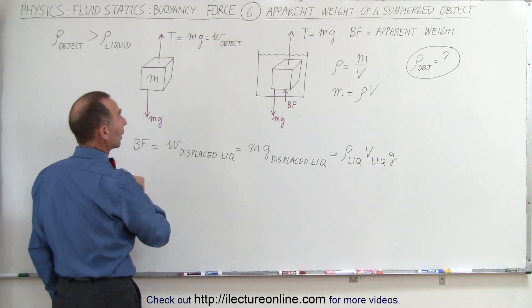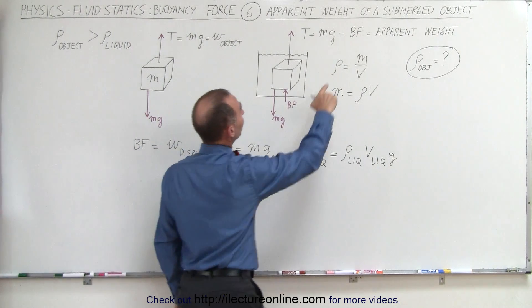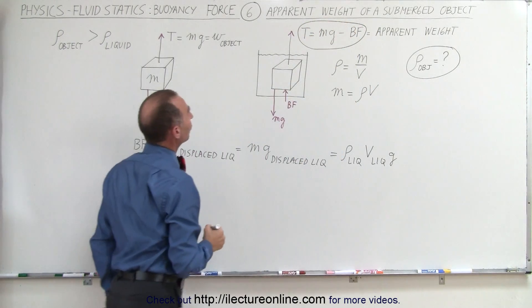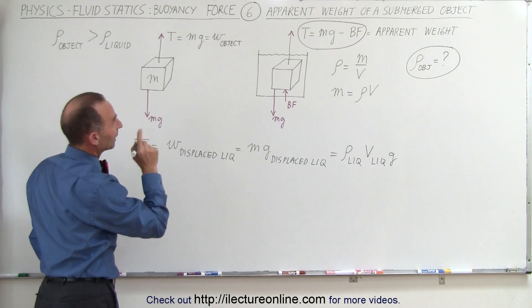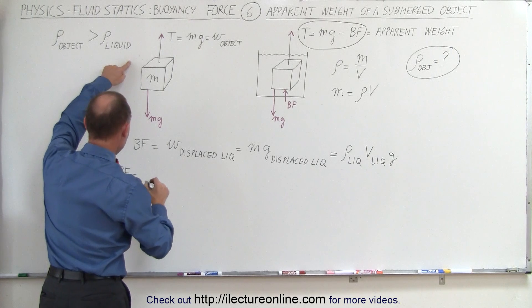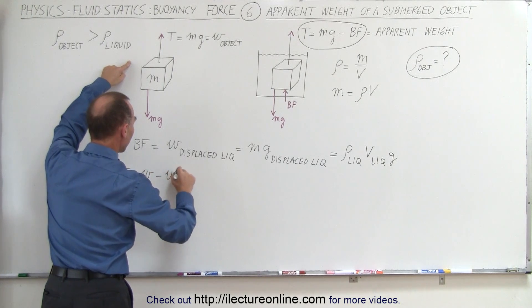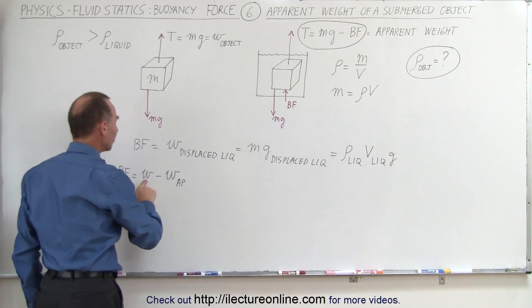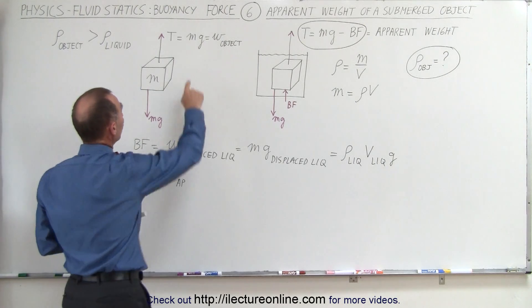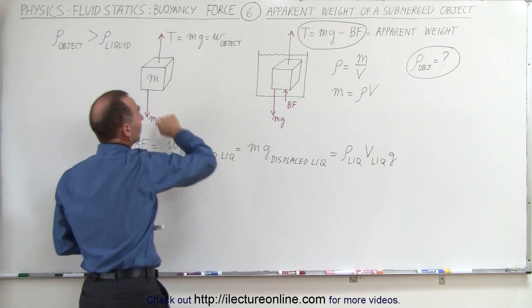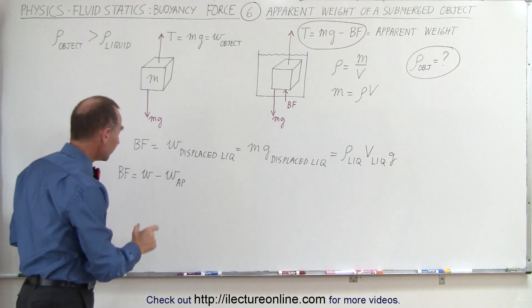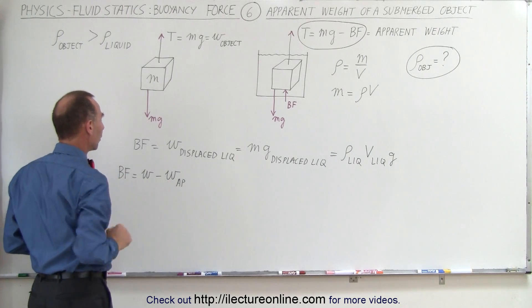If I solve for the buoyancy force using this equation, I can say that the buoyancy force is equal to the difference between the actual weight of the object minus the apparent weight. The difference between those two can be measured: you measure the weight of the object while suspended in air, then you measure the apparent weight while submerged in liquid, and the difference between those two is equal to the buoyancy force.